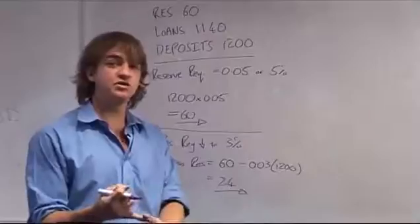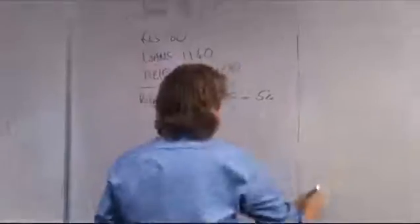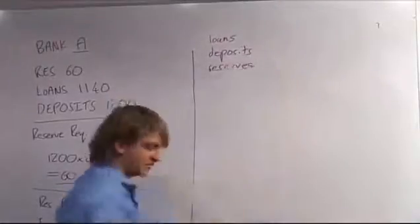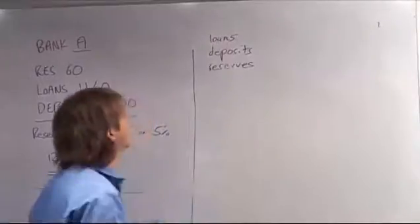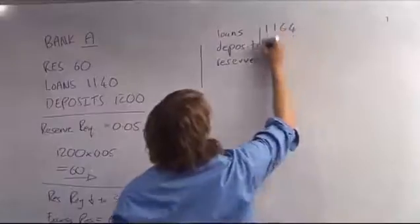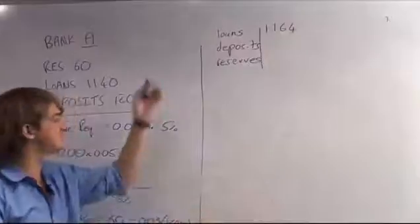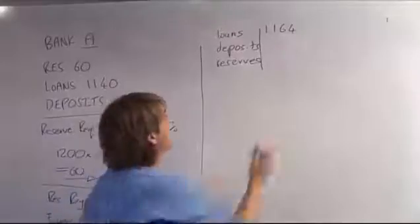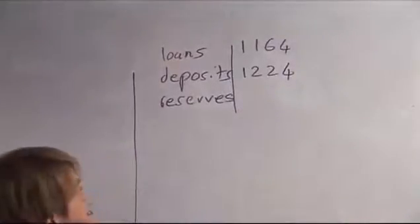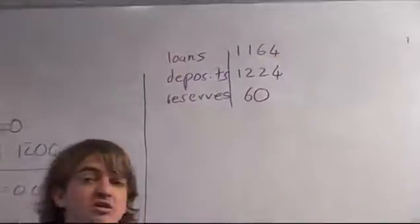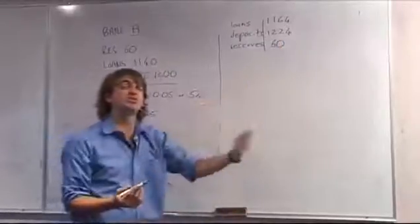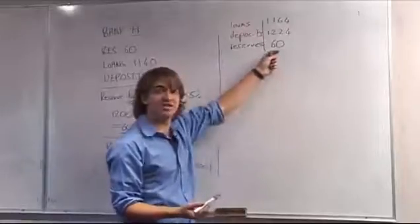What is the status of your loans, deposits, and reserves after the bank has granted the checkbook but nothing has been spent yet? Your loans increase by 24, going to 1,164. That makes sense — you've lent out more money. Your checkable deposits also increase by 24, going to 1,224, because you've increased the checks available in the economy. But your reserves remain at 60, because those people haven't actually spent that money yet.